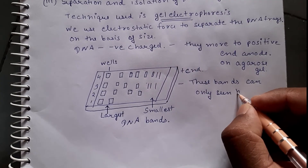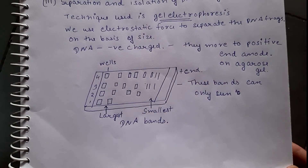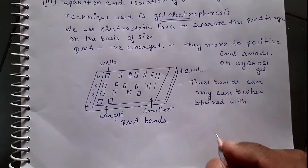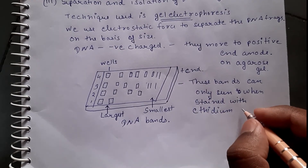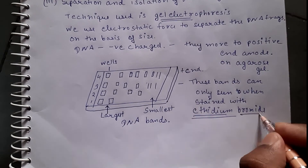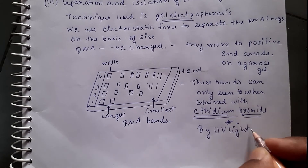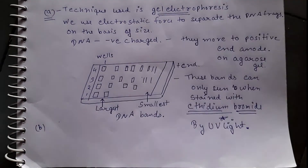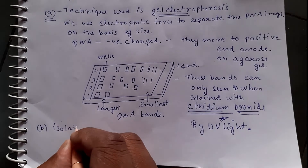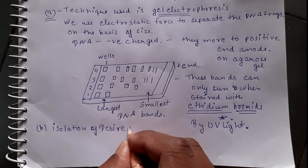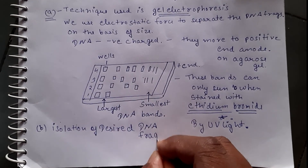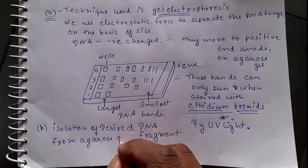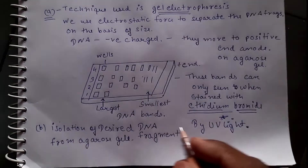The DNA bands have been separated but we cannot see them with the naked eye. To see them we use a stain called ethidium bromide. When we shine UV light on the agarose gel, we can see the DNA bands. Using ethidium bromide and UV light to visualize DNA is an important exam question. Once we have separated the DNA fragments, we can obtain our desired DNA. The process of separating the DNA fragments from the agarose gel is known as elution, which is also an important point for exams.